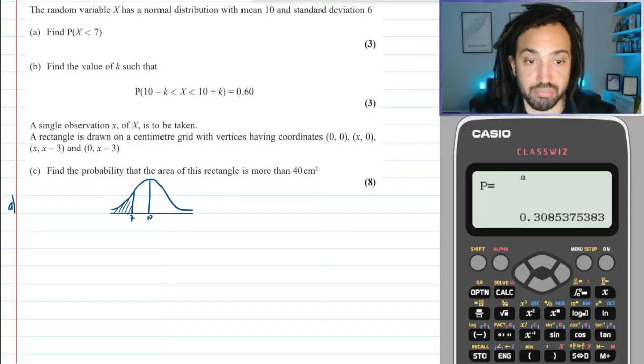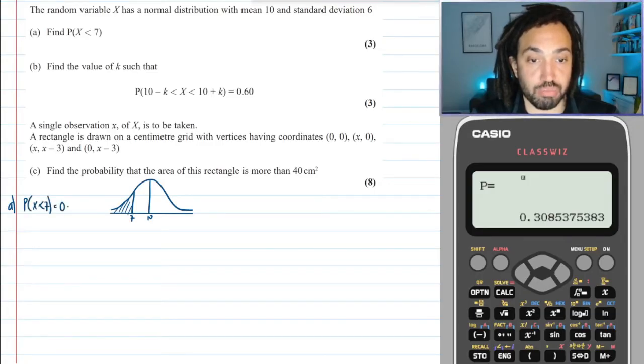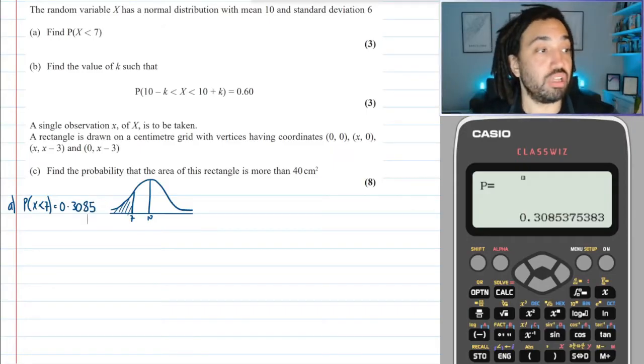So part (a), the probability that X is less than 7 is equal to 0.3085, and that's a decent amount of accuracy. Okay, lovely.